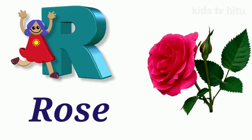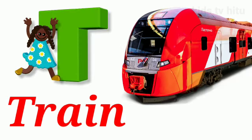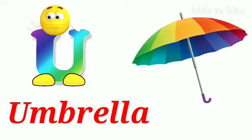Q for queen. R for rose. S for sun. T for train. U for umbrella.